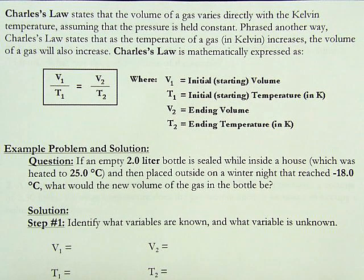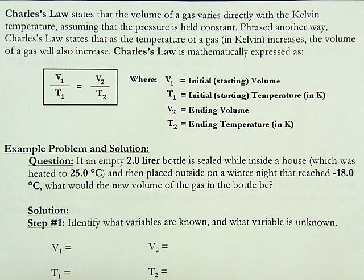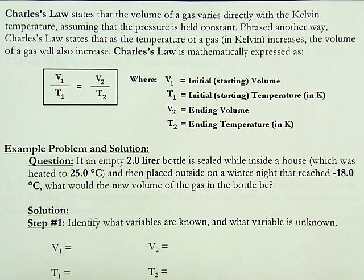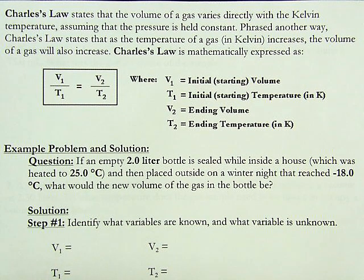Saying that another way, the temperature and volume of the gas are directly related. When we do gas calculations, we're going to use the temperature scale of Kelvin. It's also called the absolute scale because it has no negative values — only positive numbers. This is important because if we use something like negative 15 Celsius or Fahrenheit, our calculations might give us a negative volume, which doesn't make sense. You can't have a negative volume.